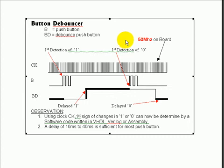Because our board has an onboard very high frequency of 50 megahertz, bouncing at the leading and trailing can be misinterpreted as changes of the value in signal B.